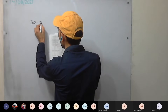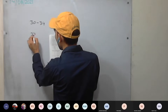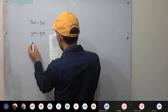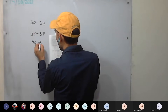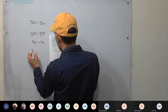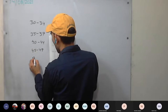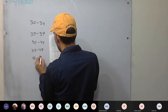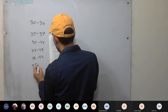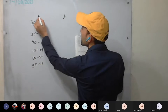The class intervals are: 30 to 34, 35 to 39, 40 to 44, 45 to 49, 50 to 54, and 55 to 59, along with their frequencies.